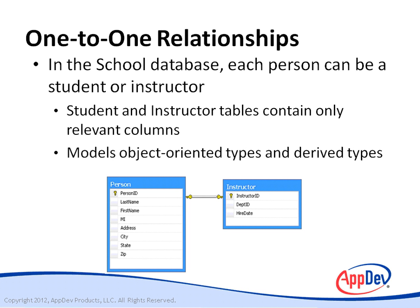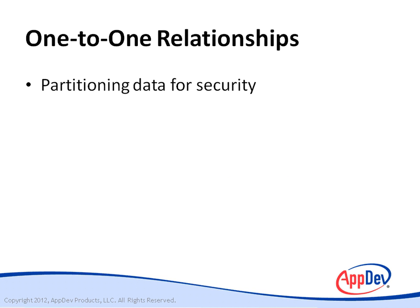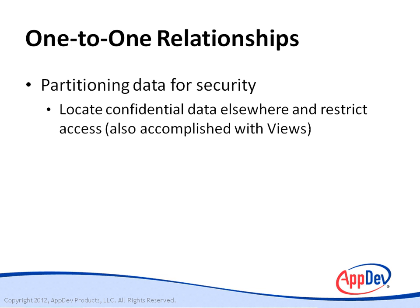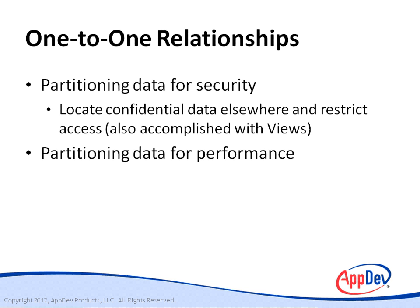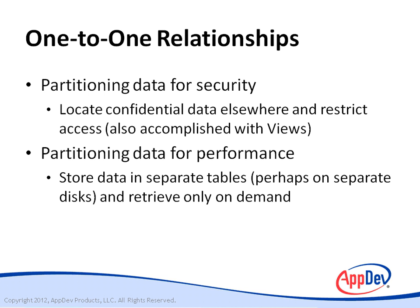One-to-one relationships, like the one for persons and instructors, can be used to represent object-oriented type hierarchies. In a middle-tier type library, person might be a base type and instructor a derived type that inherits from person. You can also use one-to-one relationships to partition a table for security, locating confidential data in a separate table and restricting access to it — and you can also accomplish that sort of thing with views, or partition data so it is retrieved only when needed.